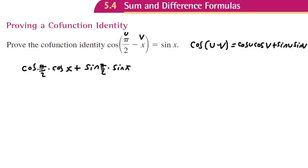Cosine of π/2—well π/2 is the coordinate point (0,1)—so that's just 0, right? So that's 0 times the cosine of x plus sine of π/2, which is the point (0,1), but that's the y-coordinate, so 1 times sine of x. And what do you know? 0 plus sine of x is just sine of x.